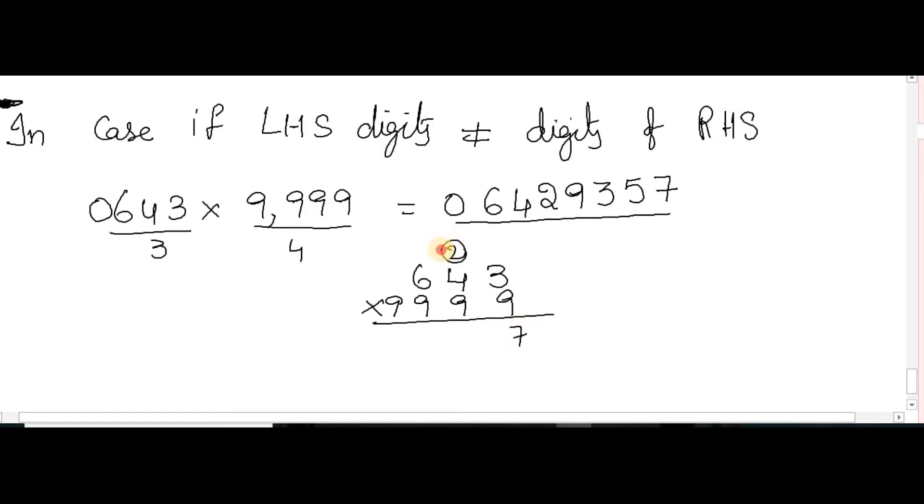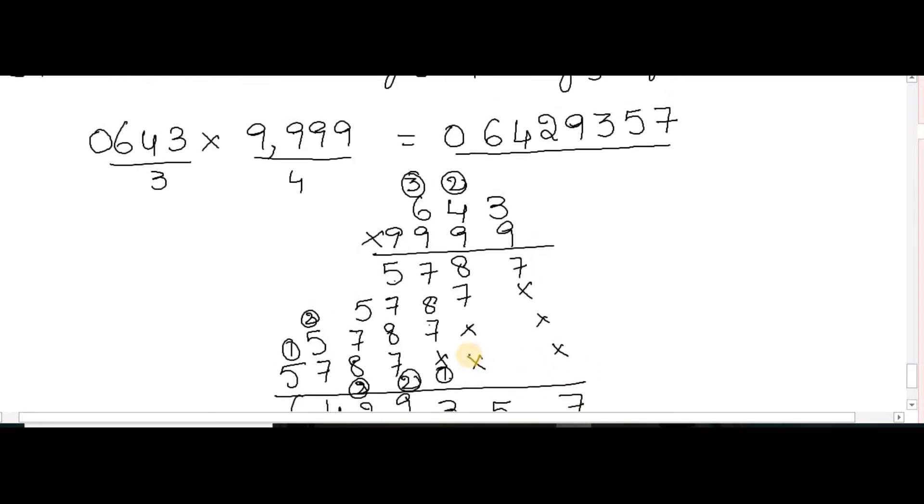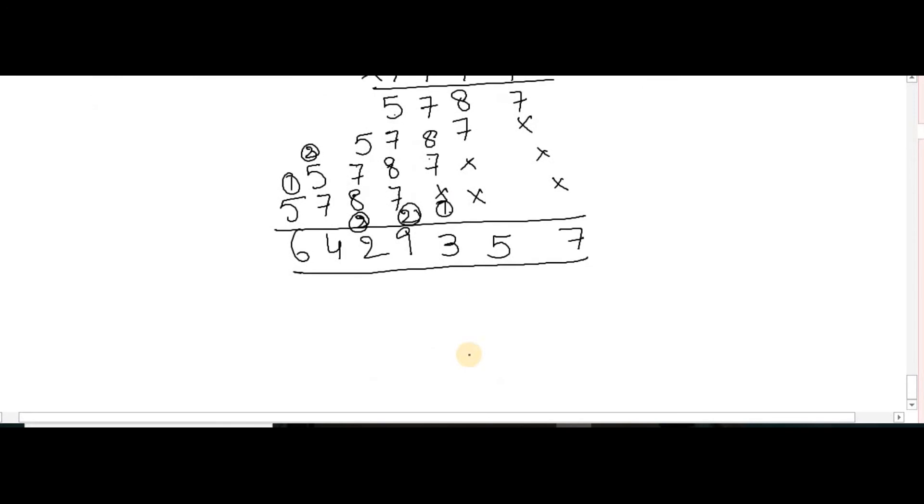9 times 3 is 27. 9 times 4 is 36, plus carry 2 is 38. 9 times 6 is 54, plus 3 is 57. The calculation gives us the same answer.